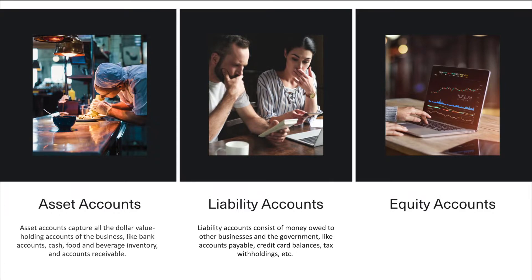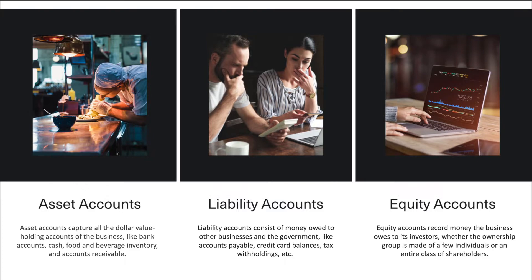Liability accounts consist of money owed to other businesses and the government, like accounts payable, credit card balances, tax withholdings, etc. Equity accounts record money the business owes to its investors, whether the ownership group is made of a few individuals or an entire class of shareholders. Common categories here are owner capital, common stock, and retained earnings.